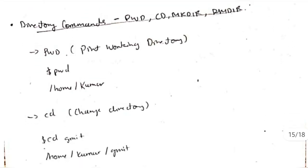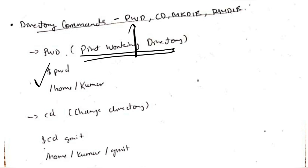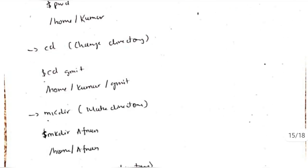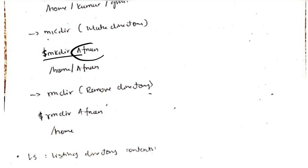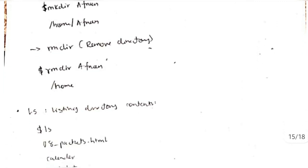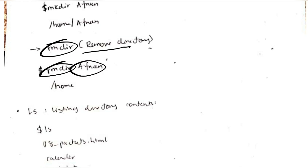Some directory commands: 'pwd' — print working directory — prints which directory you are currently in. 'cd' means change directory — if I write 'cd gmit', I will go from home/kumar to home/kumar/gmit, so the directory is changed. 'mkdir' means make directory — if I write 'mkdir none', it will create home/none. 'rmdir' means remove directory — if I write 'rmdir none', that directory will be removed.